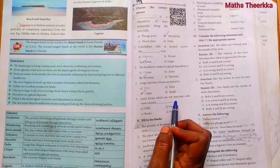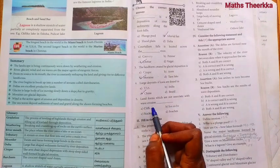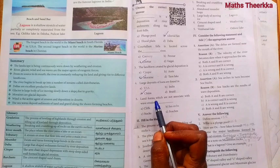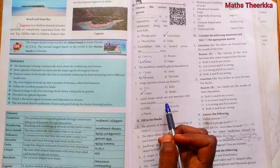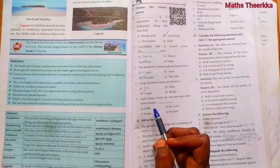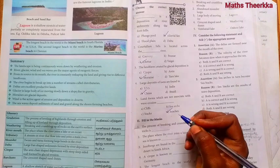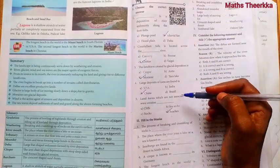Fifth one, landforms which are not associated with wave erosion. Option D, beaches. Choose the correct answers.